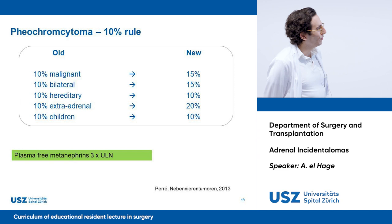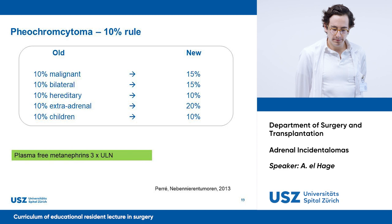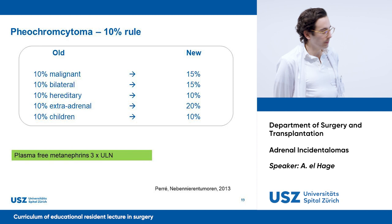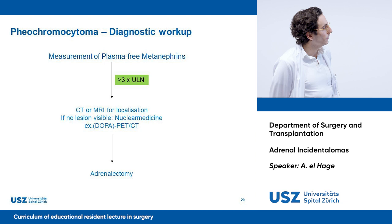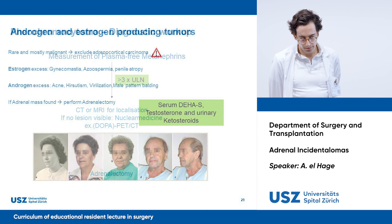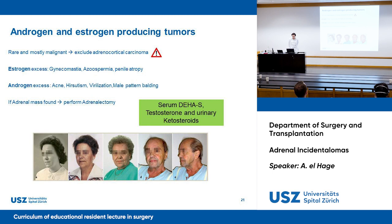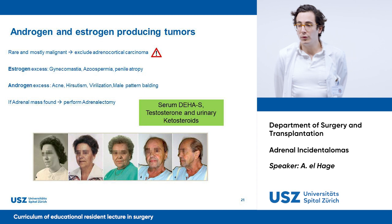For diagnostics: if you have a plasma-free metanephrine above three times the upper limit of normal, you're facing a pheochromocytoma. Once confirmed, you want a radiological assessment for localization, and then you go for adrenalectomy. Androgen-producing tumors are rare but mostly malignant. Here you have a typical example of a patient who underwent virilization due to an androgen-secreting tumor — clearly an indication for adrenalectomy. Measure serum DHEA, testosterone, and ketosteroids in the urine.